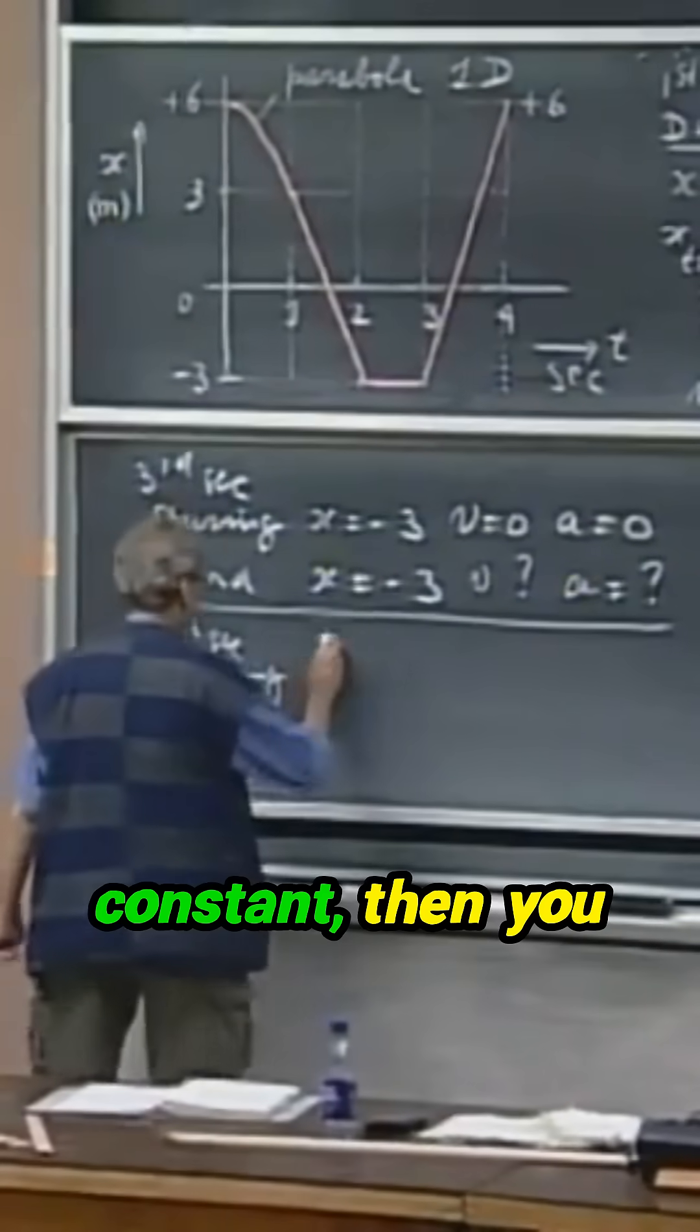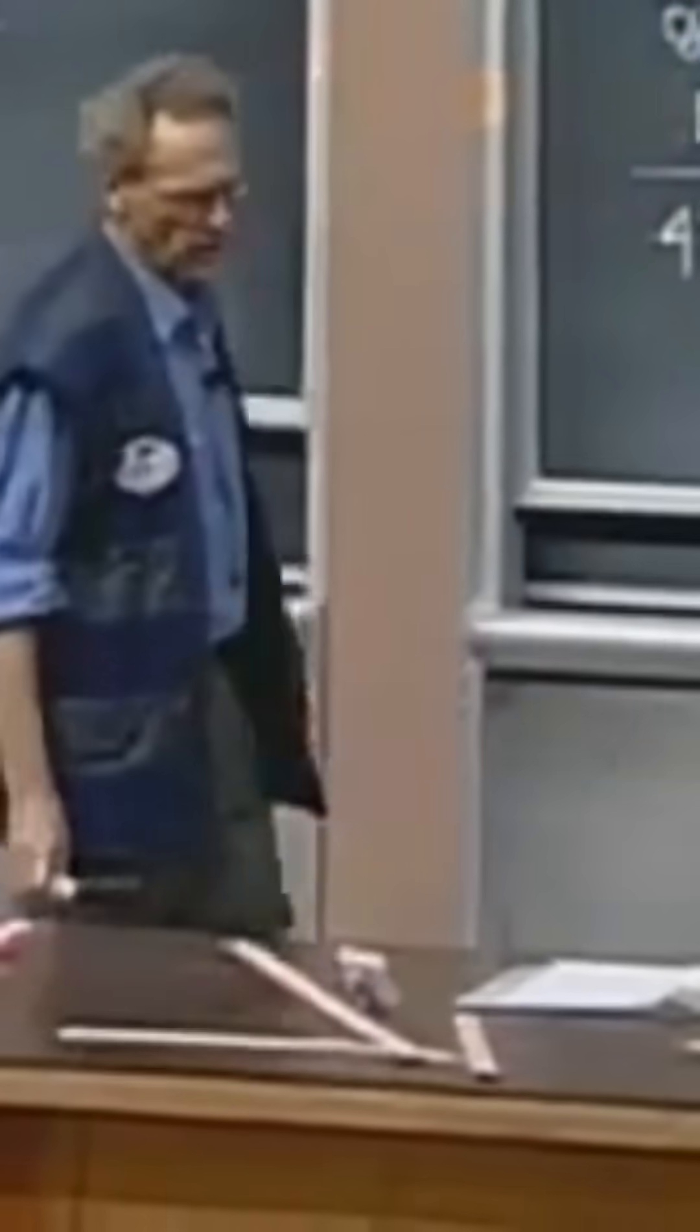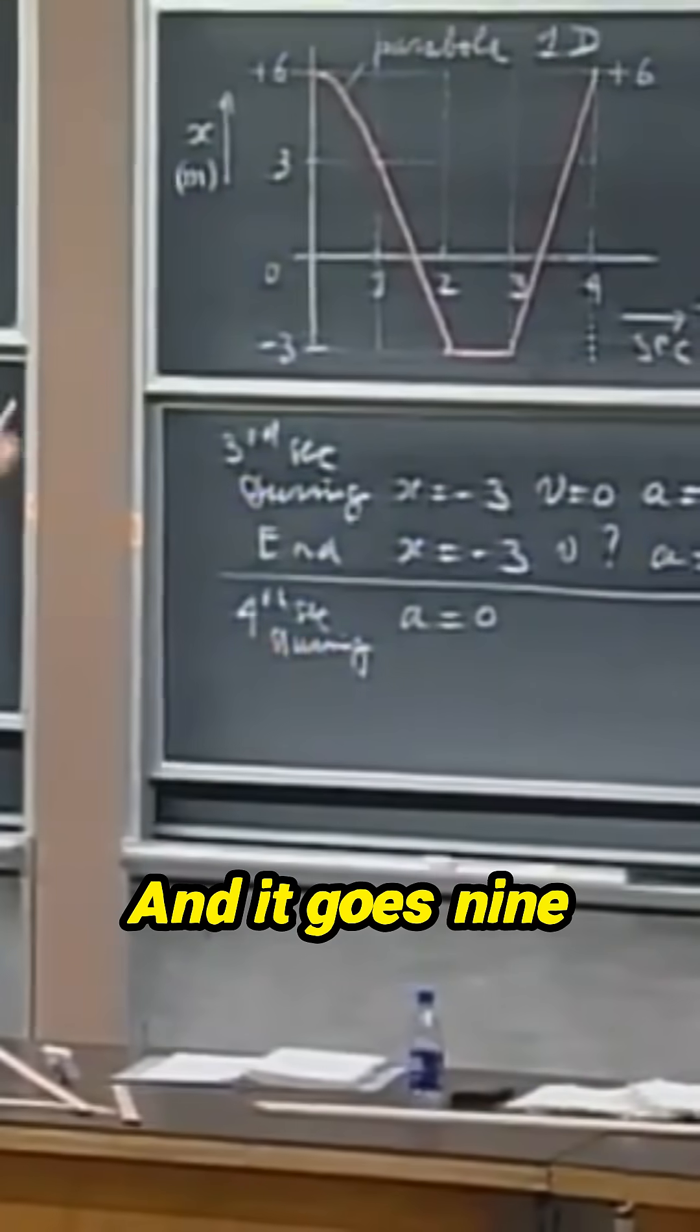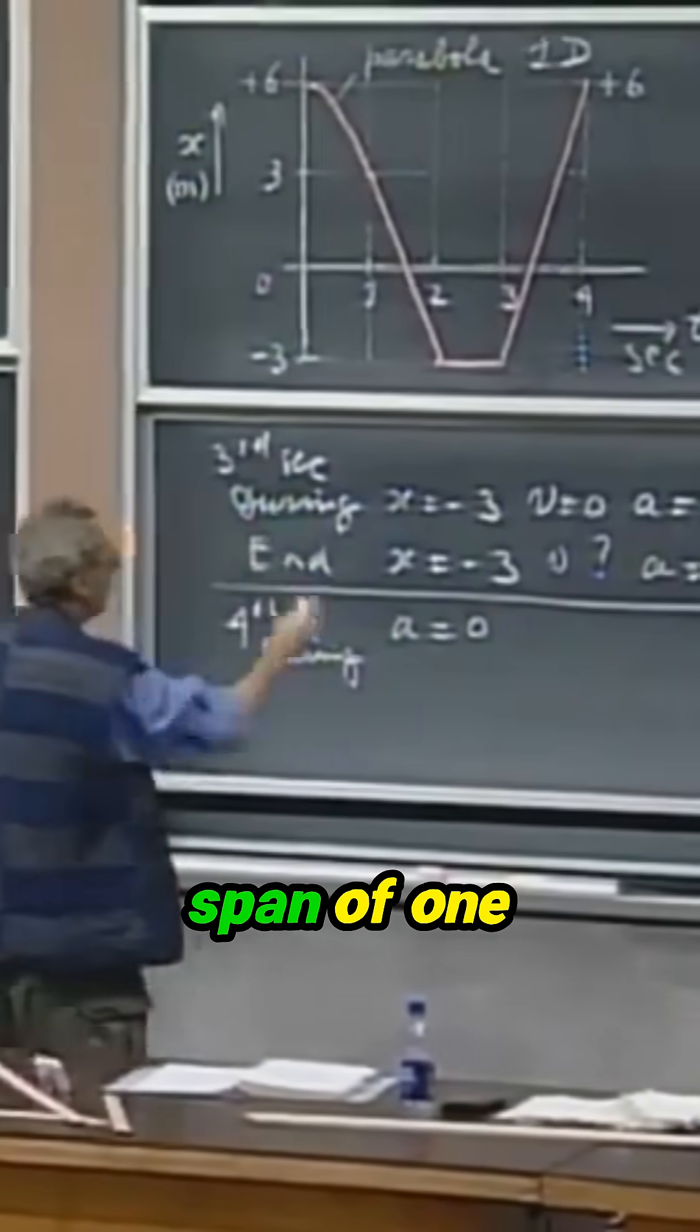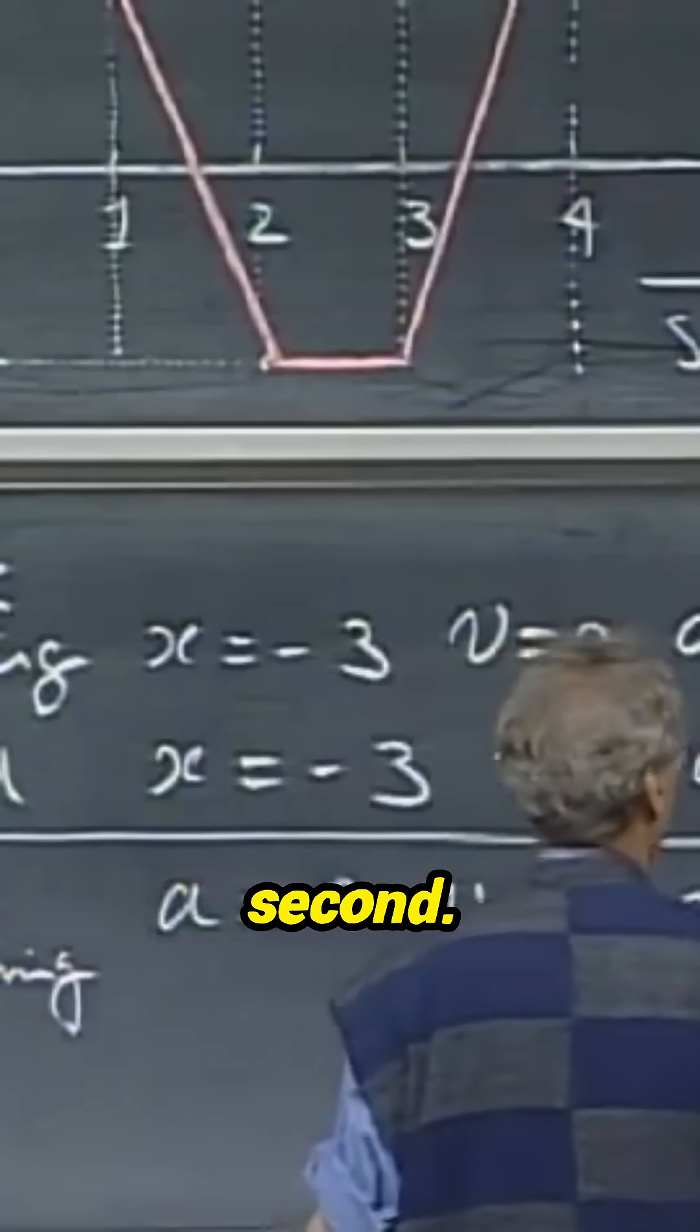If the velocity is constant, then you can immediately conclude that a is zero. There's no acceleration. And it goes nine meters in a time span of one second, so it's nine meters per second.